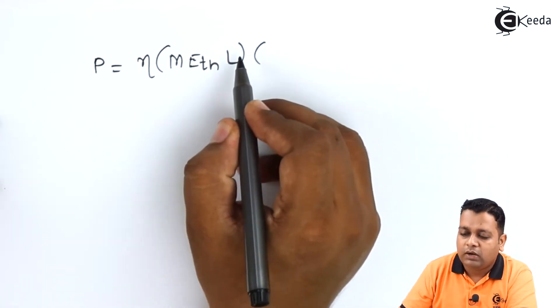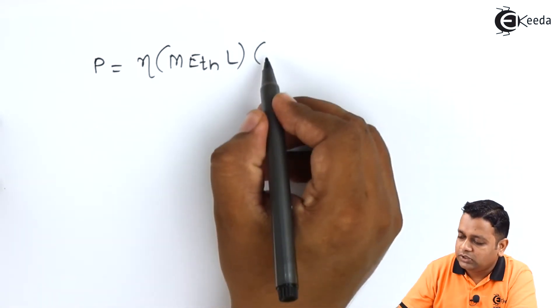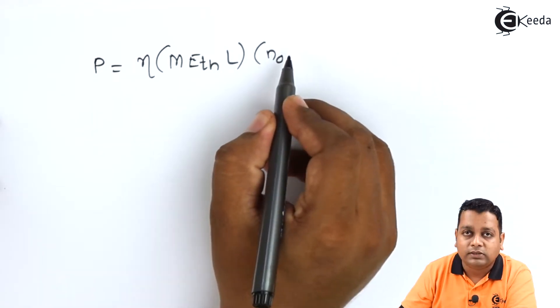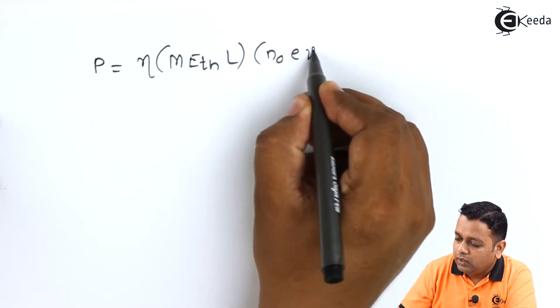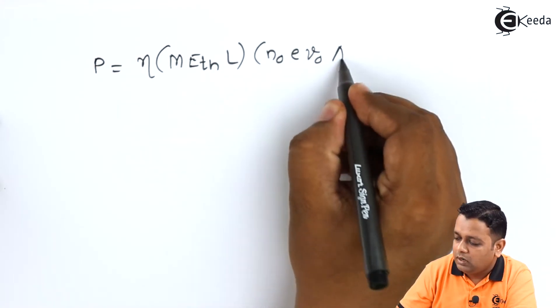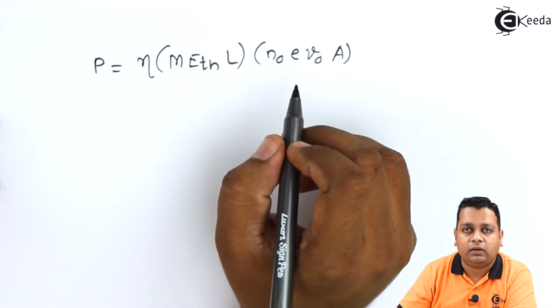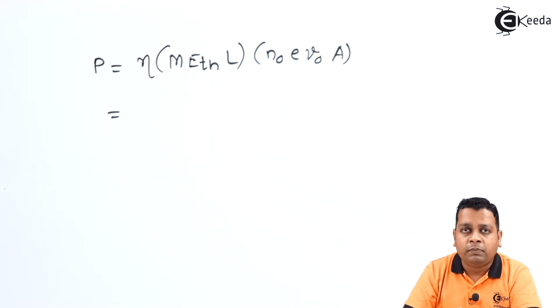In the second bracket we have the concentration denoted by N₀ into the electric charge e, the velocity v₀ and finally the area capital A. So here we have total 8 parameters onto which we can make computation of output power.